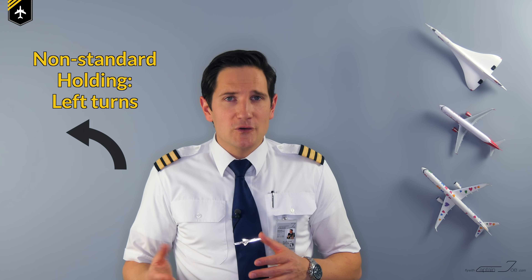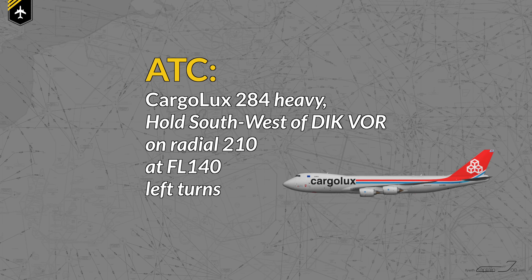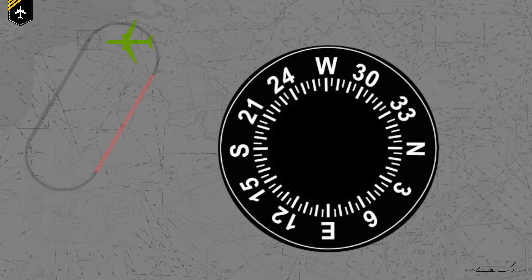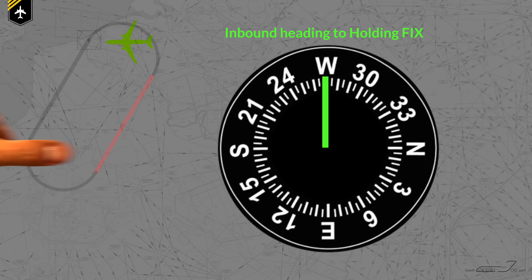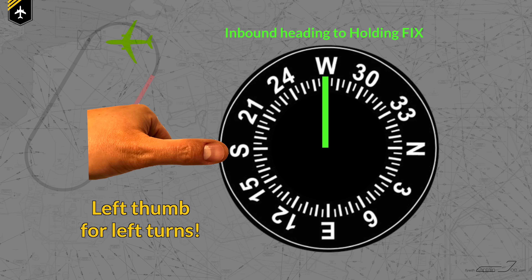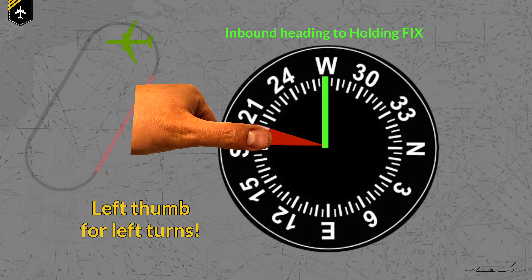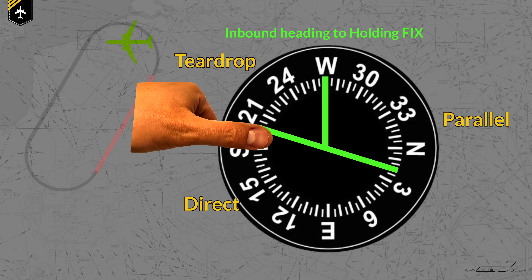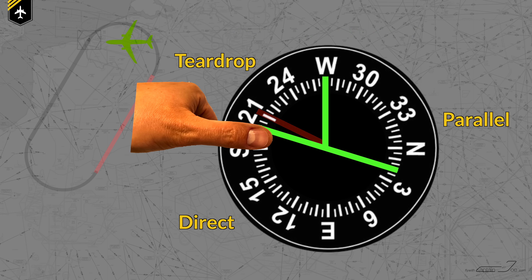Let's fly a holding with left turns — a non-standard holding with the following clearance: 'Carbelux 284 Heavy, hold south-west over Diekirch VOR on radial 210 at flight level 140, left turns.' The controller has already told us the outbound course, which is 210, and we're proceeding on heading 270 towards the VOR. Draw the heading 270 line, then use your left thumb — 90 degrees to the left of 270 is 180. Cover the 20 degrees with your thumb, draw the diagonal line across, apply the same rule: above is teardrop, opposite is parallel, below is direct. Place your outbound course 210 and — a teardrop entry.